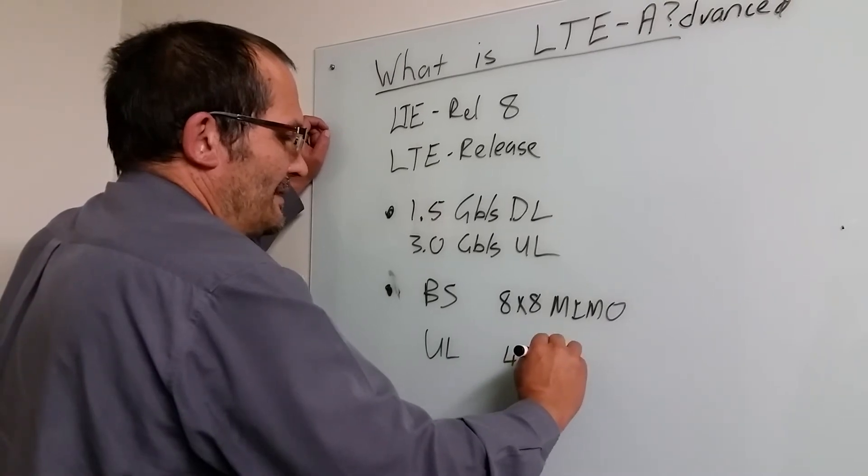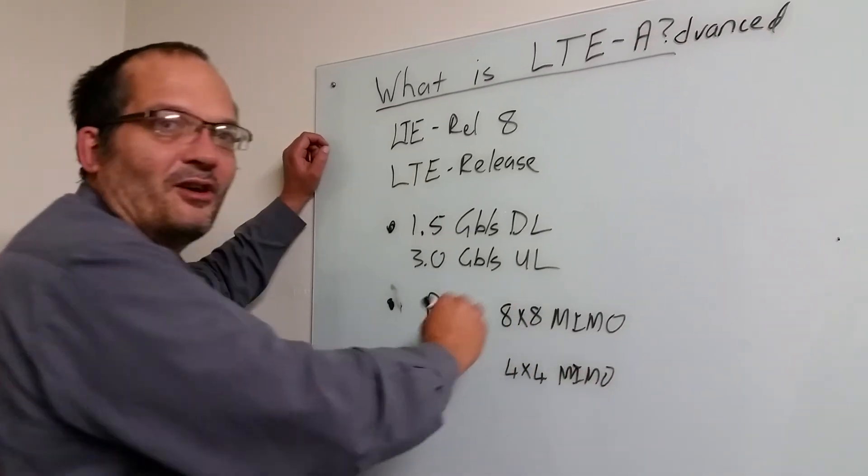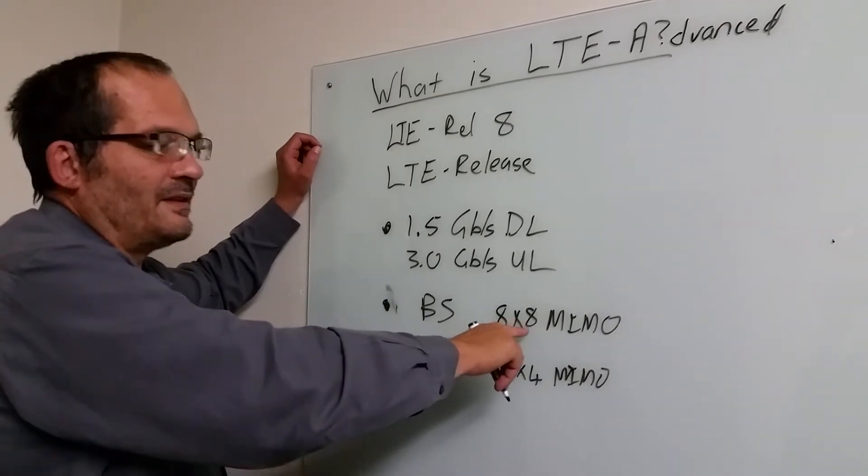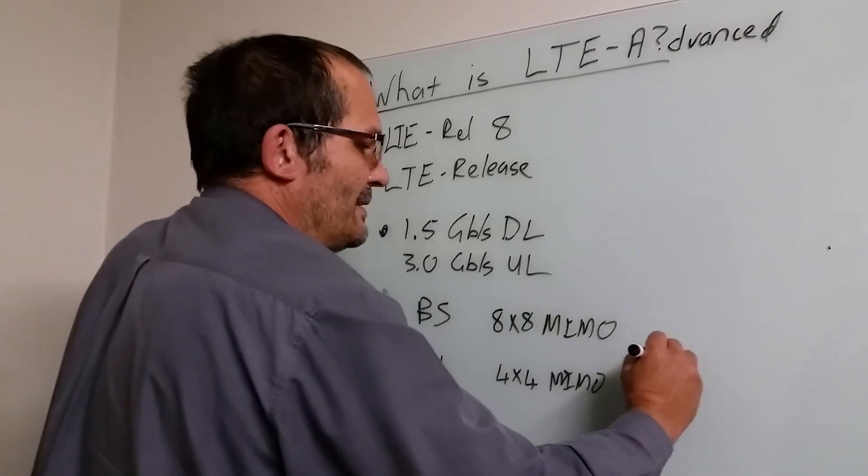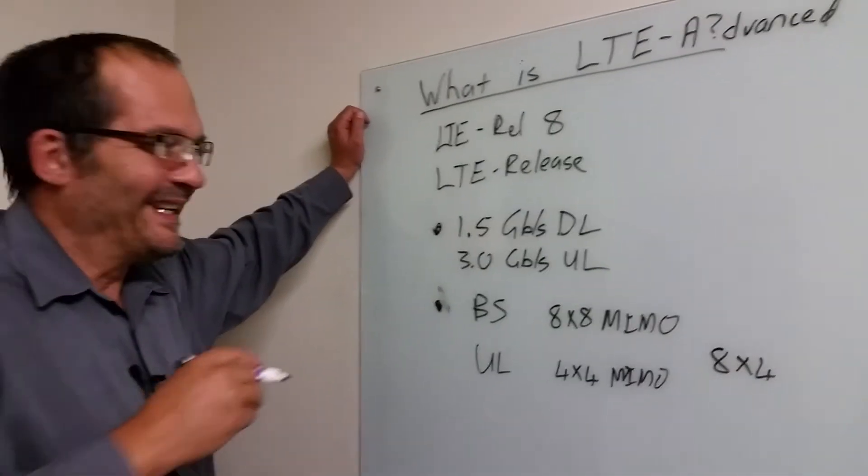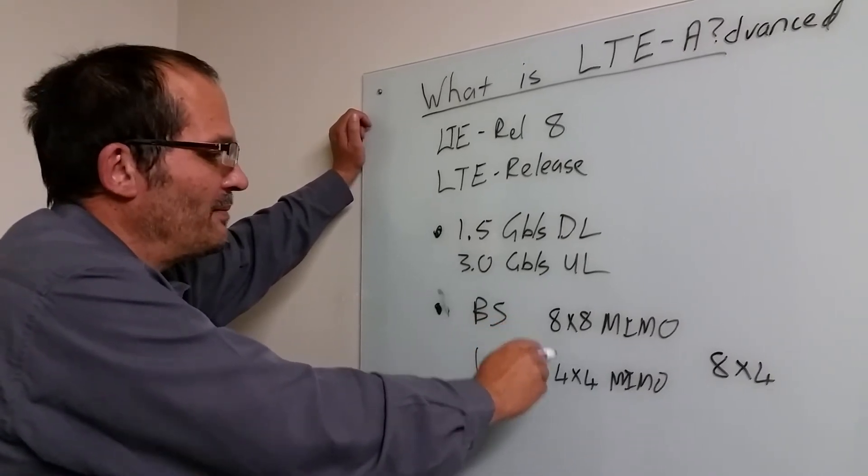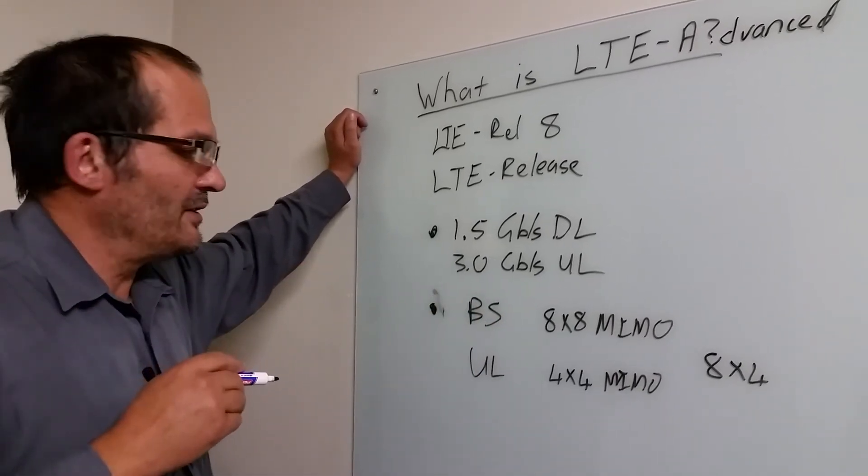Now for anyone that understands the terminology, this is actually garbage because one refers to transmit and one to receive, so it's actually in my opinion 8x4 MIMO. But let me not argue with the experts that claim so. It's actually just 8 antennas on the base station employing MIMO and 4 antennas on the user terminal.